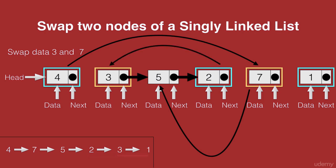And finally we see that the next of 3 points to 1. In our linked list the next of 3 points to 5. So we remove this connection and we make 3 point to the node which we had earlier saved in a temporary node, which is the node with the data 1. So now the next of 3 points to 1 and that completes the connection.